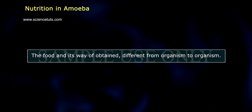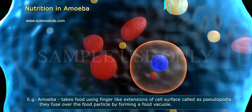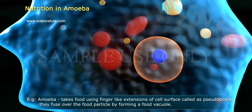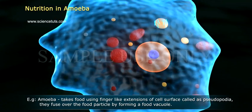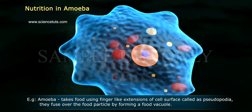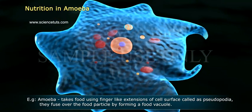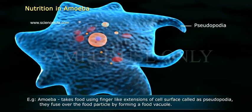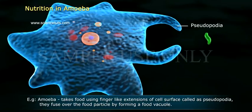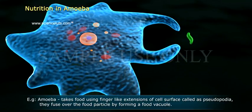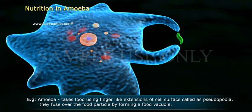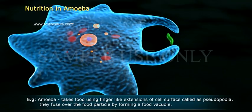Nutrition in amoeba. The food and its way of obtaining differ from organism to organism. Amoeba takes food using finger-like extensions of the cell surface called pseudopodia. They fuse over the food particle, forming a food vacuole.